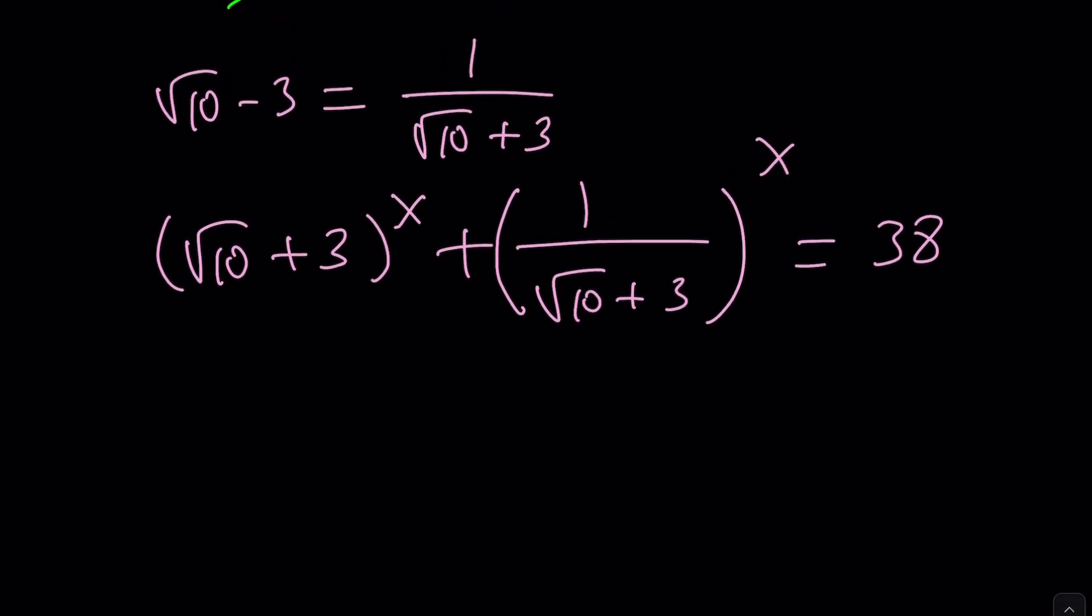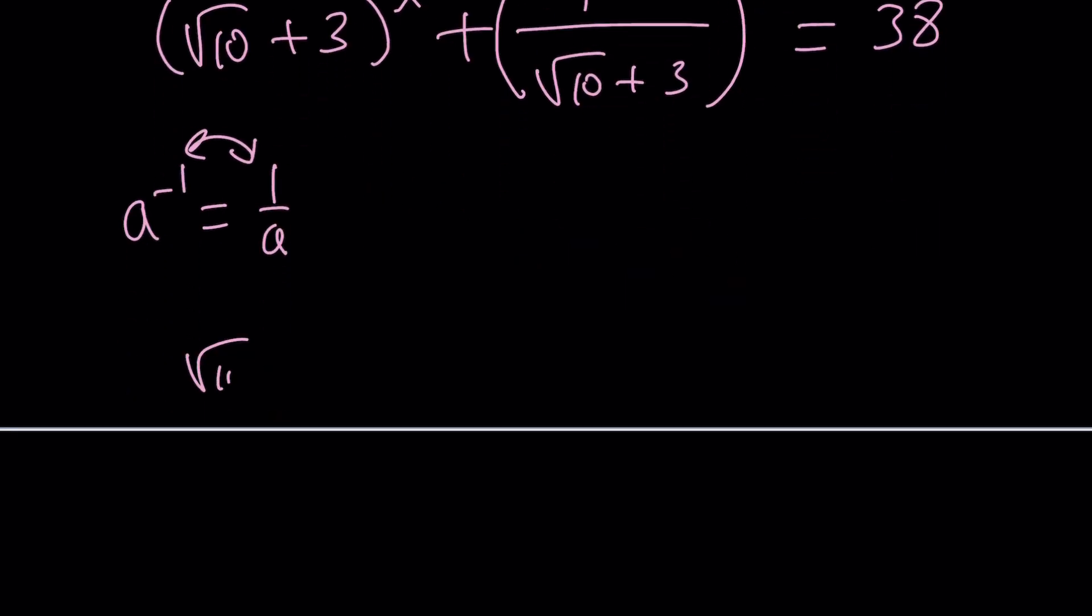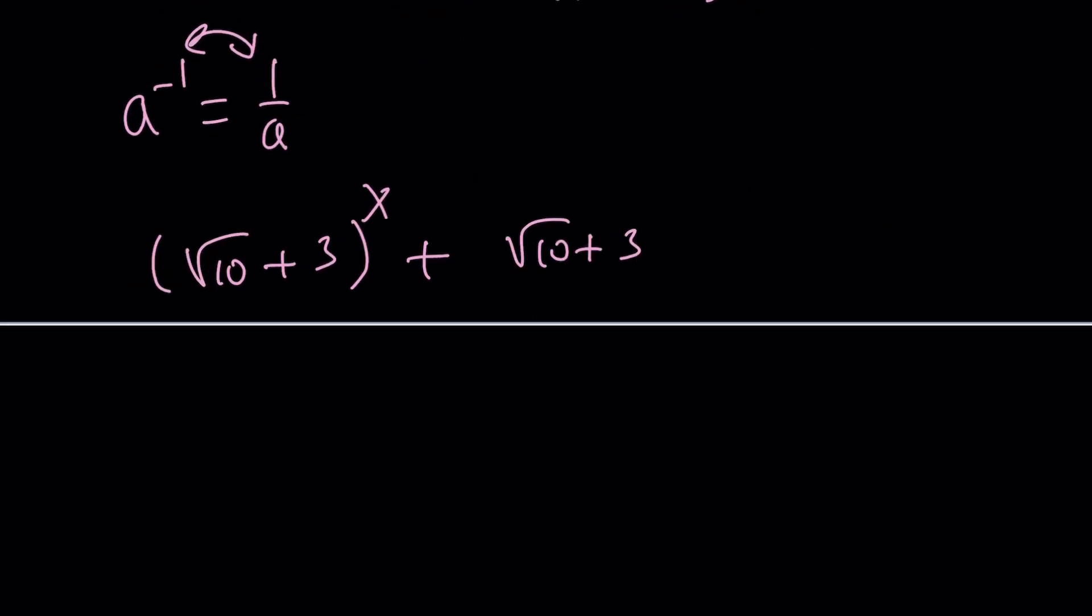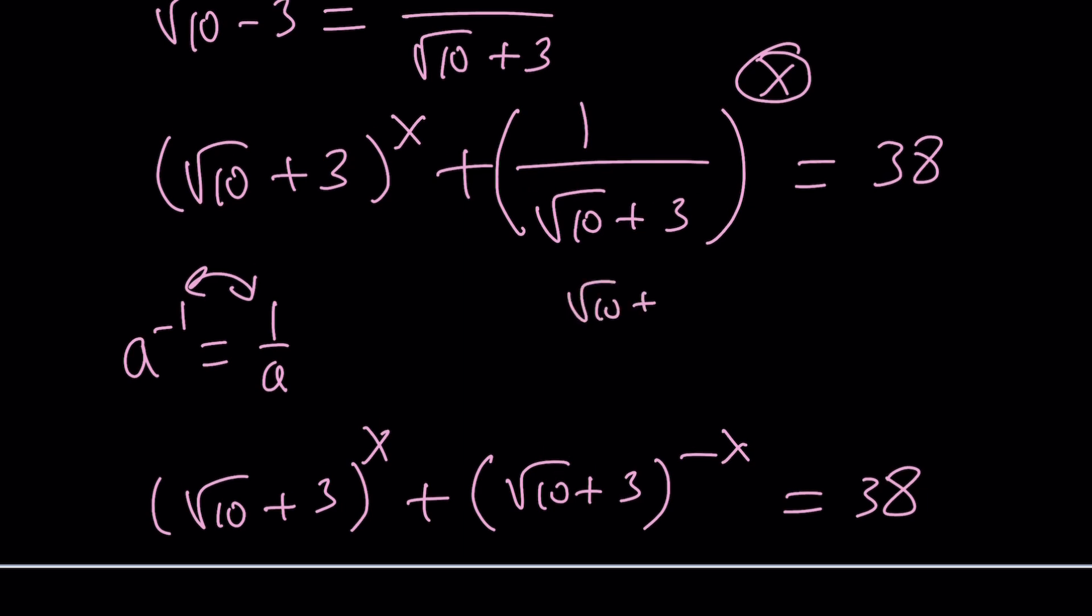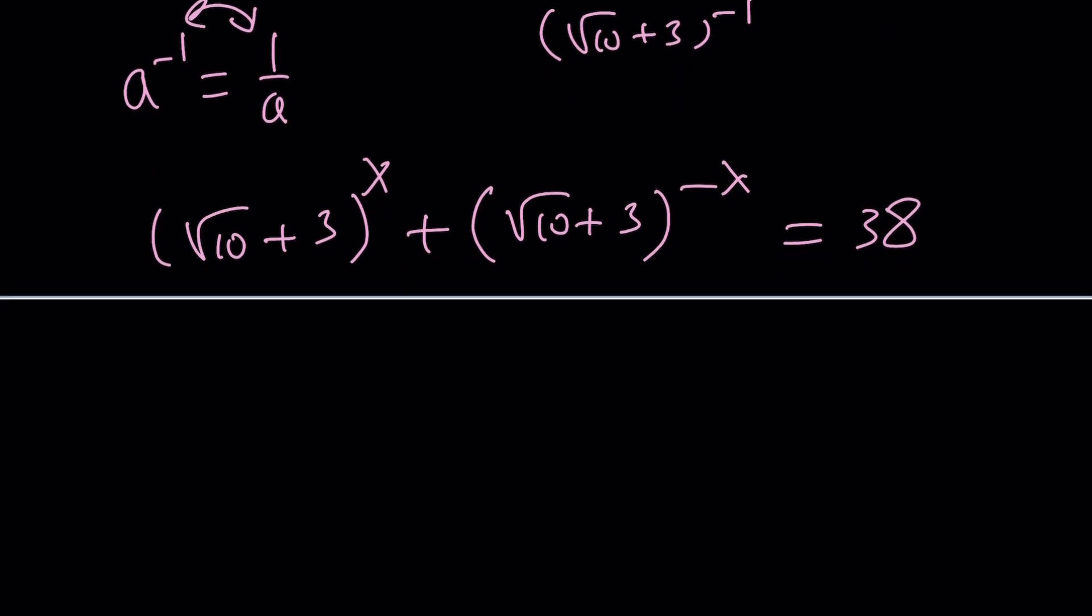Notice that the reciprocal of a number can be written as that number to the power of negative 1. What am I talking about? A to the power of negative 1 is the same as 1 over a or vice versa, right? Both ways. So now we can go ahead and do the following. Replace 1 over square root of 10 plus 3 with square root of 10 plus 3 to the power of negative 1 and then that negative 1 is the power will be multiplied by x and that'll give you negative x. Now this is really nice. You know why? Because I can use substitution.